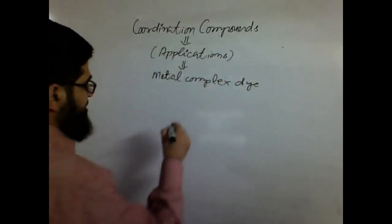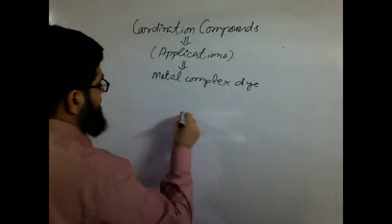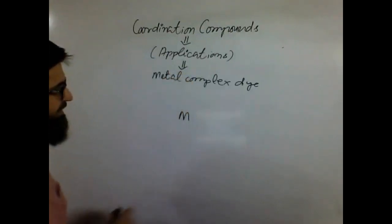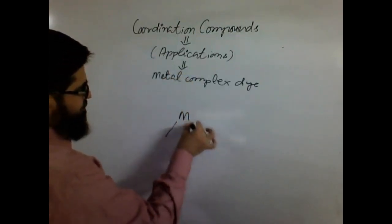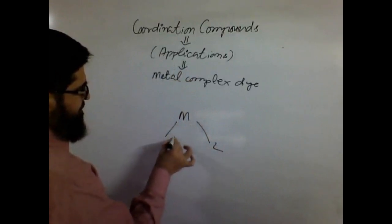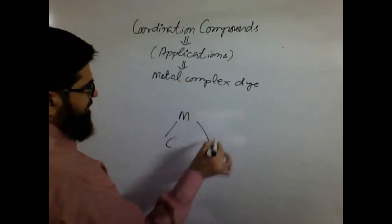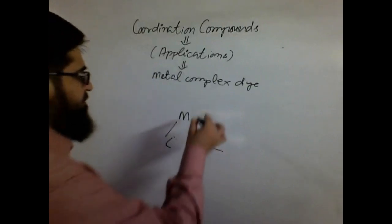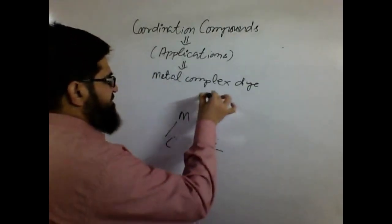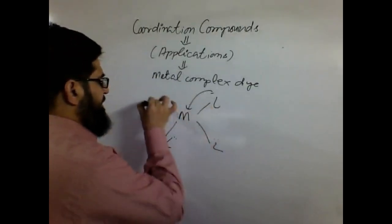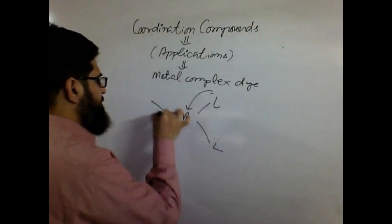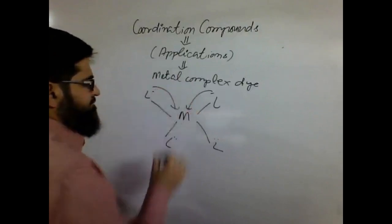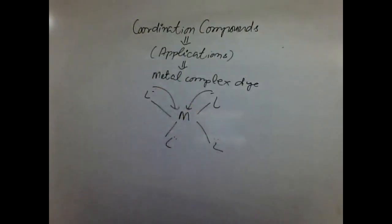As we have discussed, for coordination compounds we need to have a metal, and then we should have some sort of ligands which can donate lone pairs to the metal atom, or ligands having a negative charge that could donate electrons to the metal atom. This is how coordination complexes are prepared.